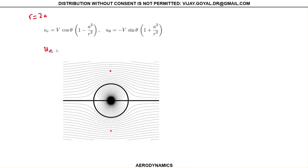Your new equation at r equal to 2a will give you U_r = V cosine of theta...